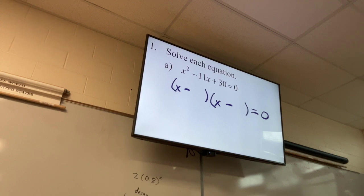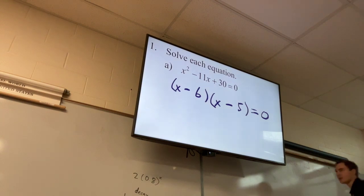Six and five. I wanted two factors of 30 that add up to 11. Six times five equals 30, six plus five equals 11.